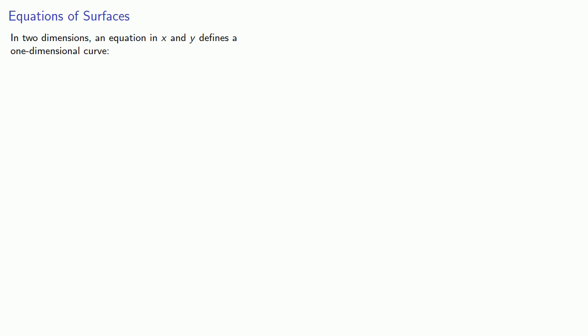In two dimensions, an equation in x and y defines a one-dimensional curve. For example, 3x plus 5y equals 15. Well, that's a straight line.